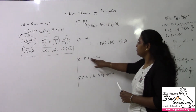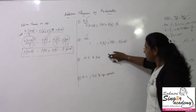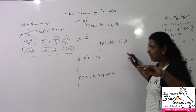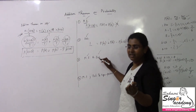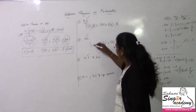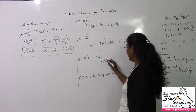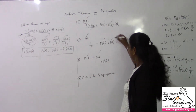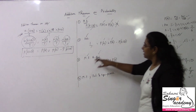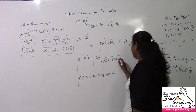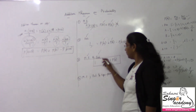Third case — mutually exclusive and exhaustive: combining both results, P(A ∪ B) = 1 and P(A ∩ B) = 0. Comparing left and right sides, the intersection term vanishes and we get 1 = P(A) + P(B). This is the result for events that are mutually exclusive and exhaustive.